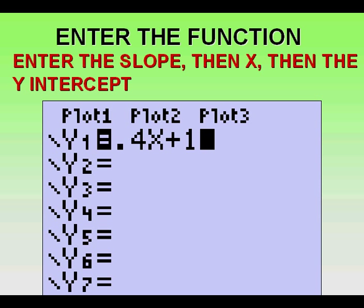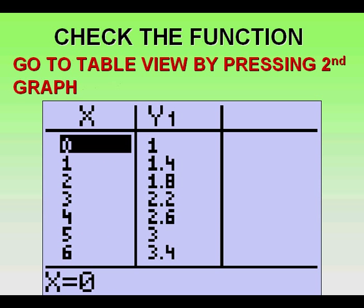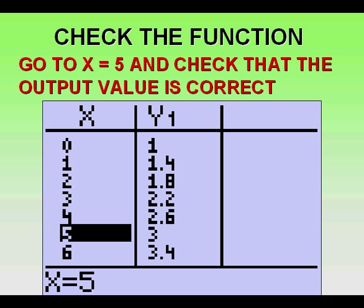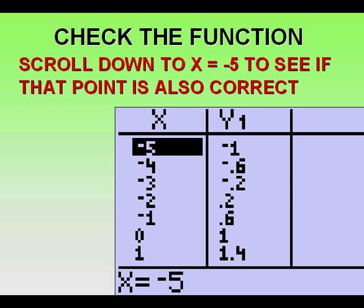From here we can go to the table view by pressing second graph. Going down to five, one of our input values, we see that our corresponding output value is three. Scrolling up to negative five, we see that negative one is our corresponding output value.